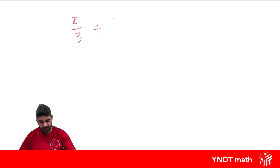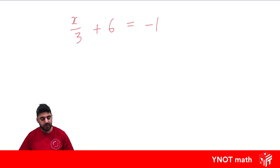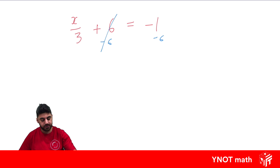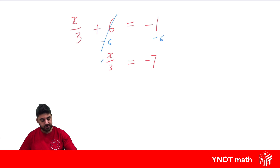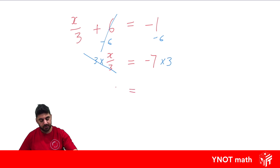x over 3 plus 6 equals minus 1. We've got two things to get rid of: the 3 and the 6, for x to be by itself. The number on its own we get rid of first, so we subtract 6 from both sides because 6 minus 6 is 0. Equals under equals — we're left with x over 3, and minus 1 minus 6 gives us minus 7. Now we need to get rid of the divided by 3 by doing the opposite: multiplying by 3 on both sides. The 3 and divided by 3 simplify to 1, leaving x equals minus 7 times 3, which is minus 21.